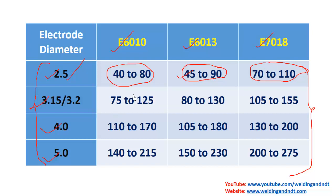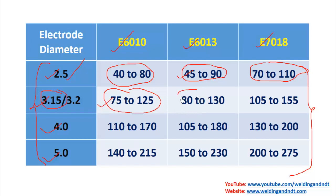For 3.15mm diameter electrode: E6010 current range is 75 to 125 amperes, E6013 current range is 80 to 130 amperes, and E7018 current range is 105 to 155 amperes.